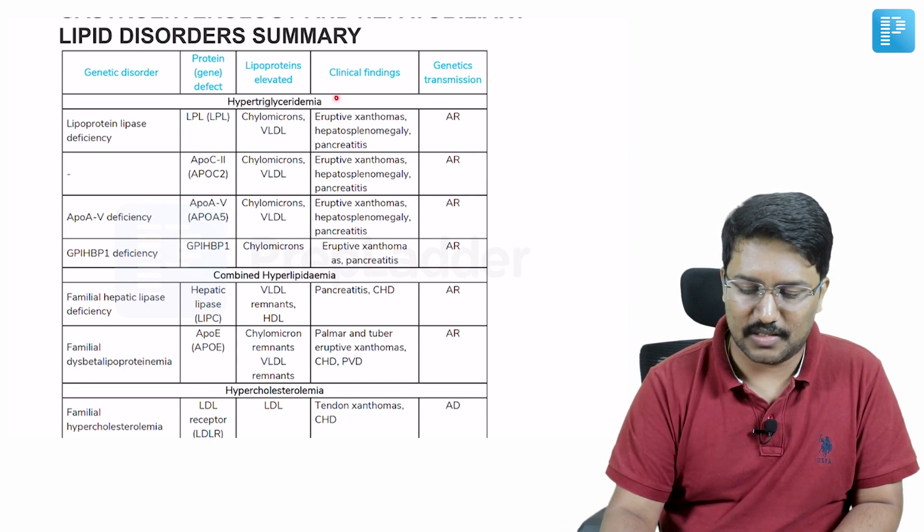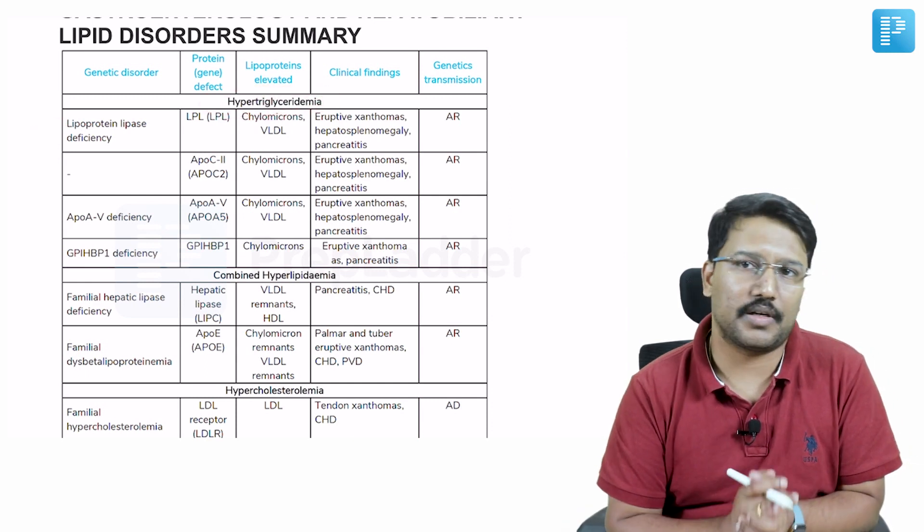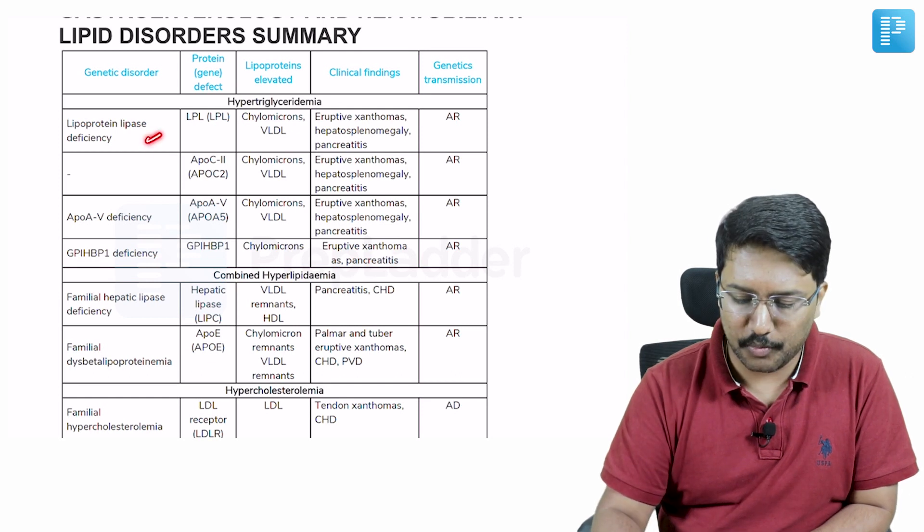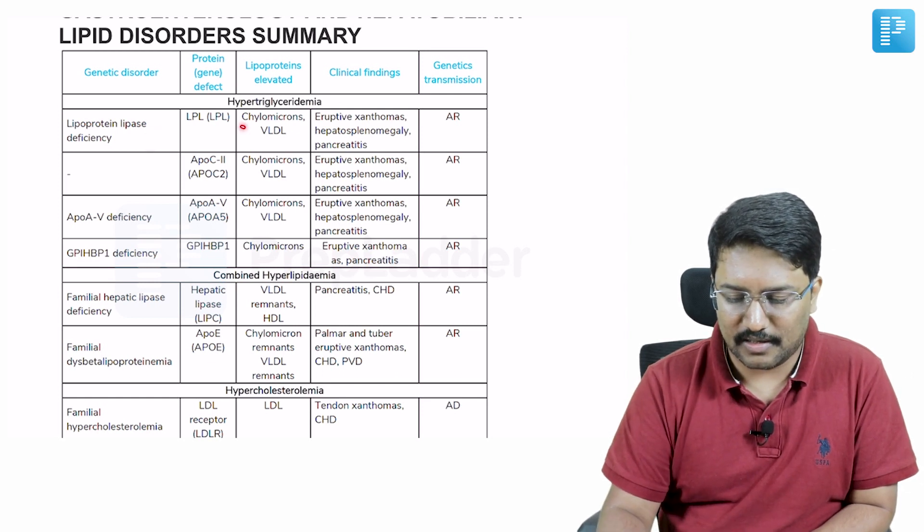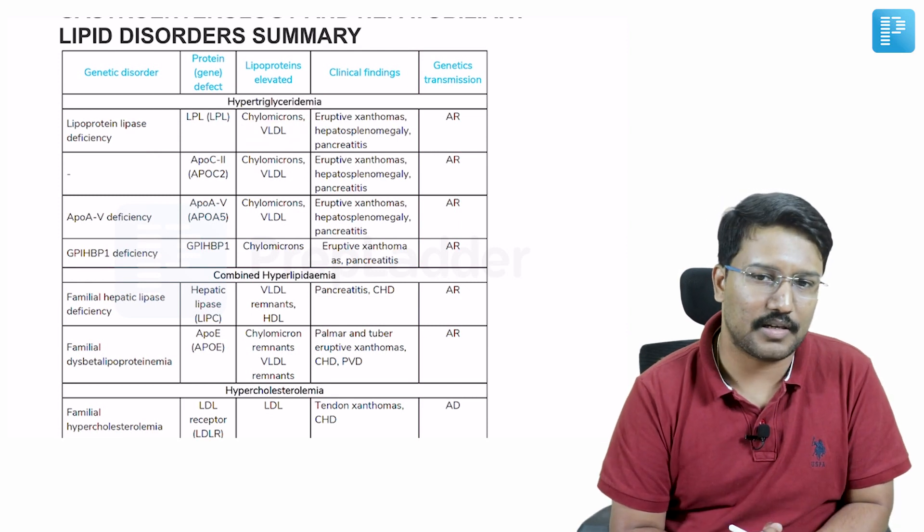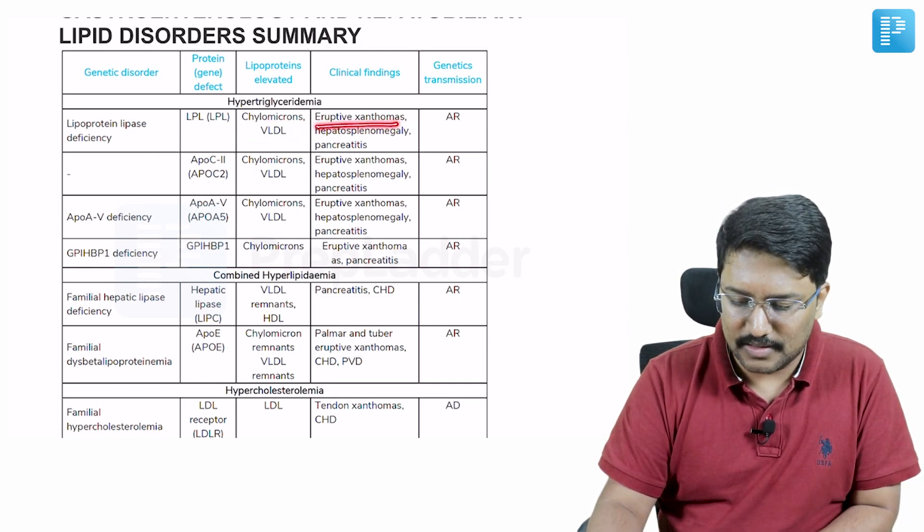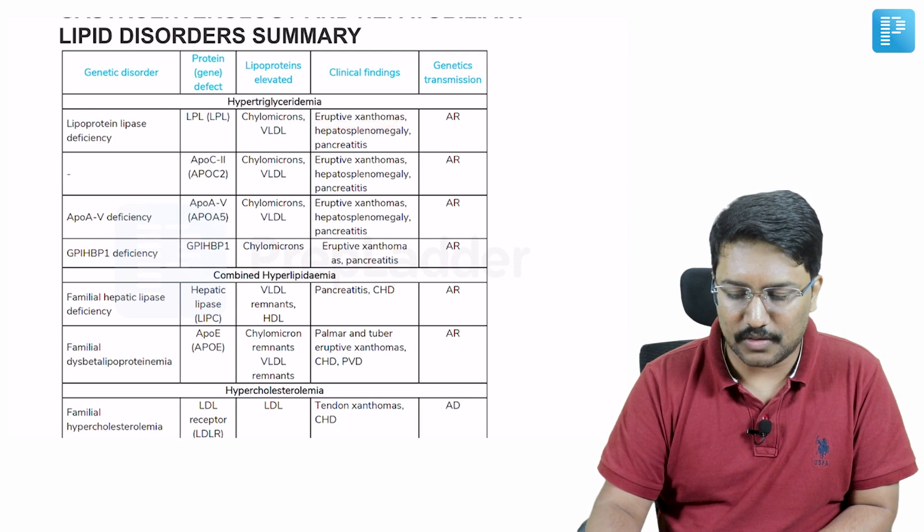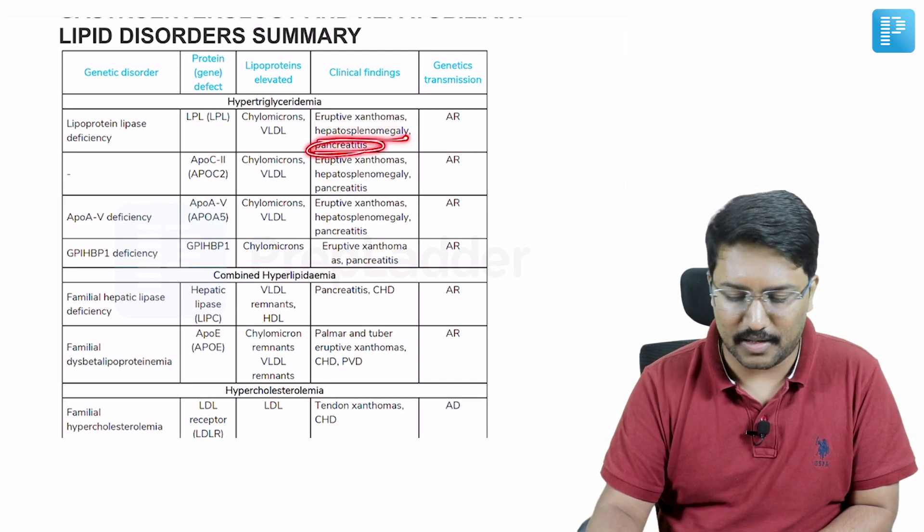For example, lipoprotein lipase deficiency is one of the causes for familial hypertriglyceridemia. Lipoprotein lipase deficiency is characterized by elevated chylomicrons and VLDL. We are already talking about hypertriglyceridemia. In terms of clinical findings, these are characteristically associated with eruptive xanthomas, hepatosplenomegaly and pancreatitis.